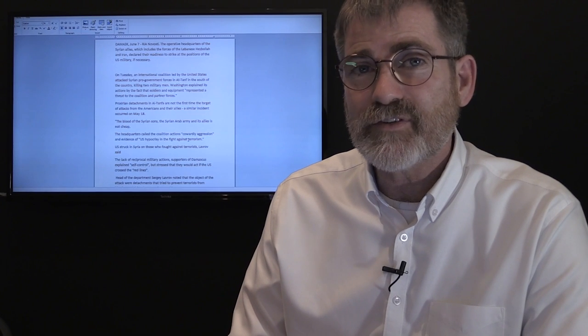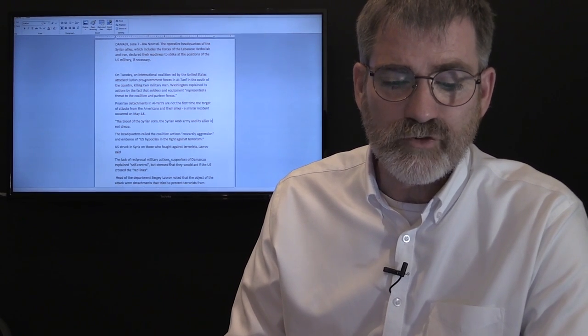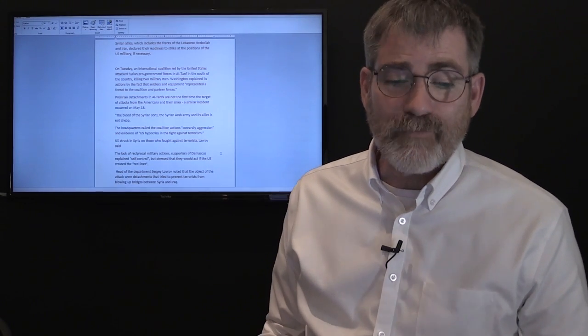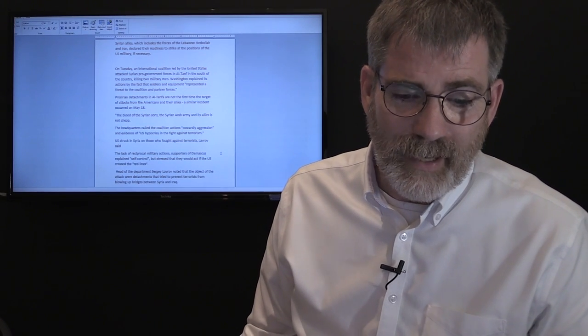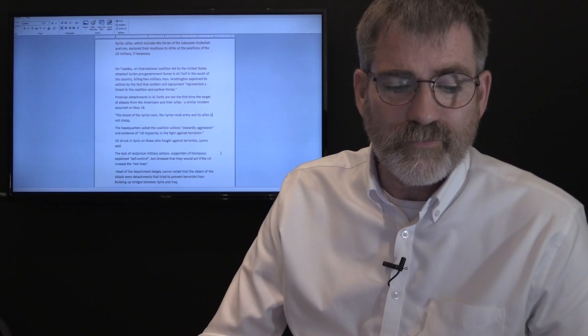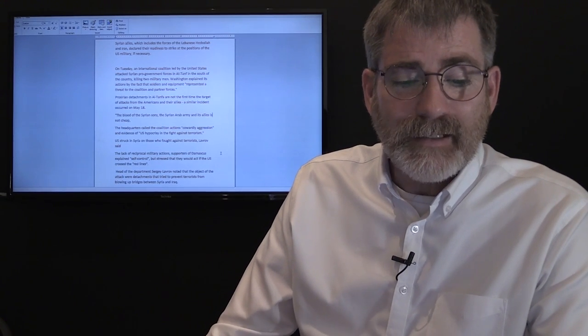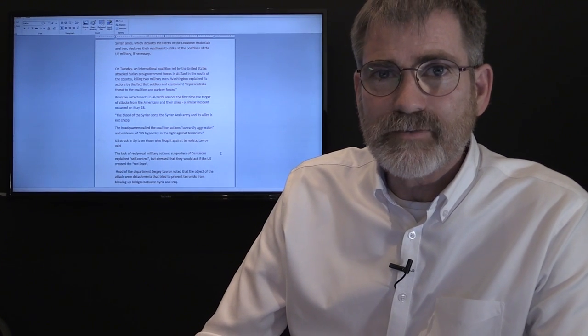The headquarters called the coalition's actions cowardly aggression and evidence of U.S. hypocrisy in the fight against terrorism. Lavrov said the lack of reciprocal military action supporters of Damascus explained self-control, but stressed that they would act if the U.S. crossed the red lines. That's Sergey Lavrov. I wonder what Russia considers to be a red line inside of Syria.